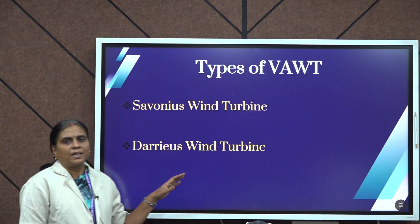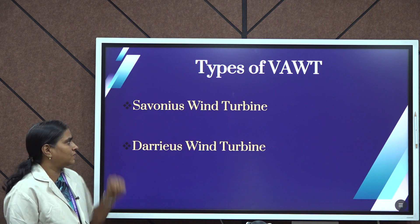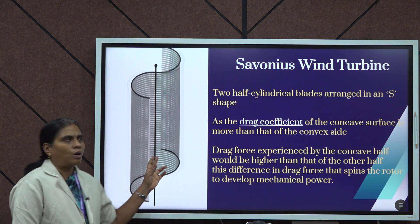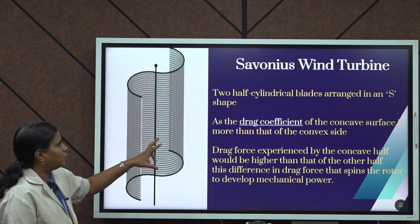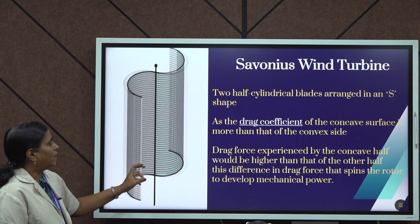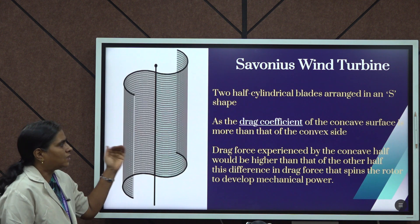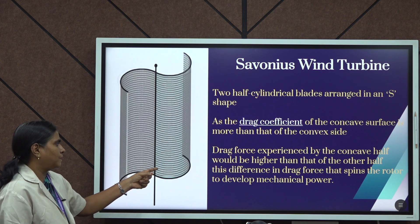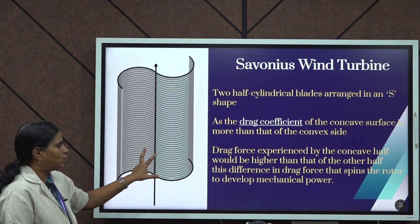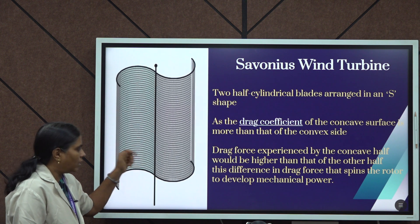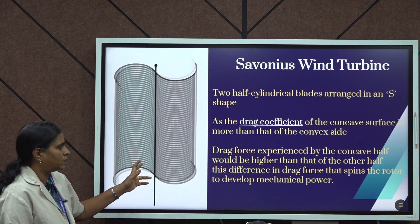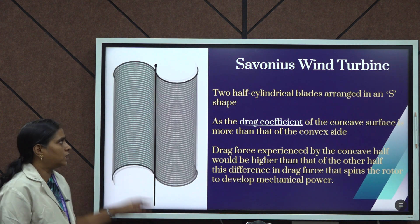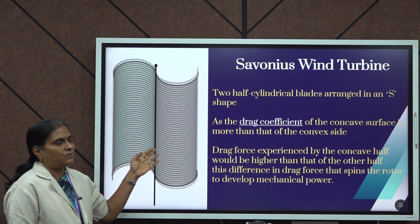Vertical axis wind turbines can be classified into two types: first is the Savonius wind turbine, and second is the Darrieus wind turbine. The Savonius wind turbine has two half-cylindrical blades in an S-type configuration, called an S-type rotor. One blade has a concave surface and the other a convex surface. The concave surface has a higher drag coefficient compared to the convex surface. The difference in drag force between the two sides rotates the rotor, developing mechanical power.